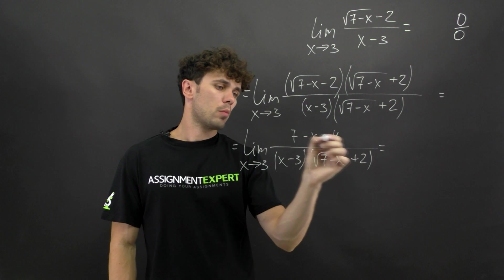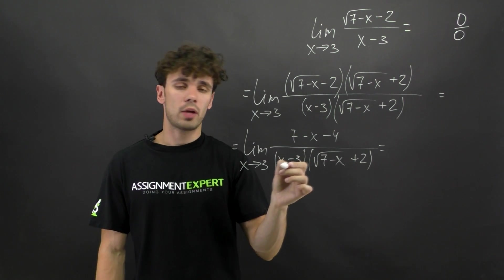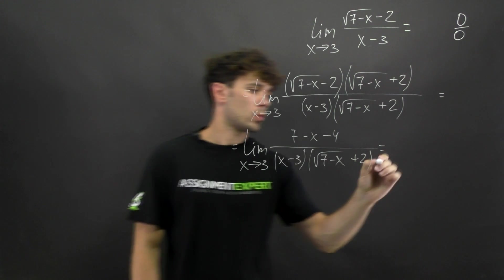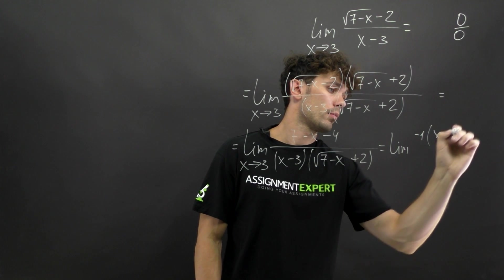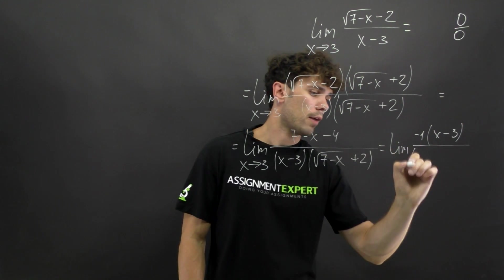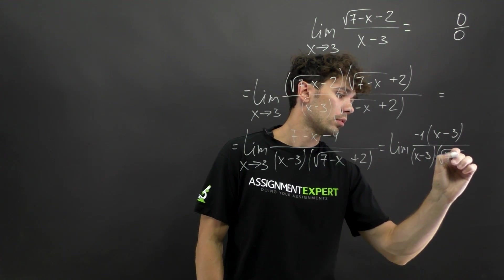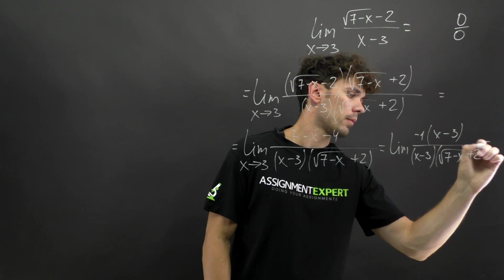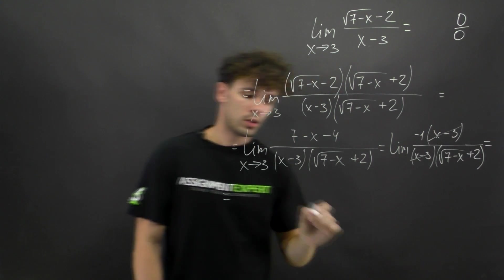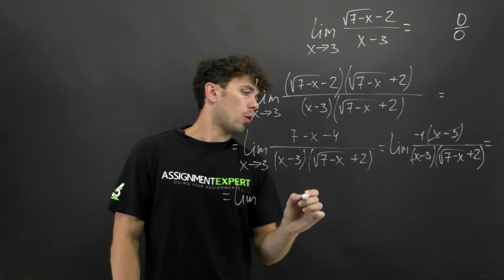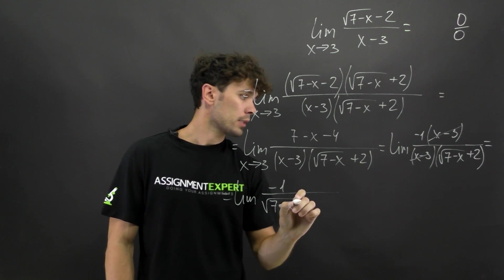In the numerator, 7 minus x minus 4 gives us 3 minus x, which is similar to x minus 3 except we need to factor out negative 1. So now we get the limit of negative 1 times (x minus 3) in the numerator, over (x minus 3) times (square root of 7 minus x, plus 2). We cancel out (x minus 3) and get the limit of negative 1 over (square root of 7 minus x, plus 2).